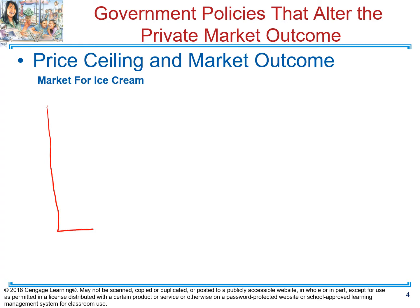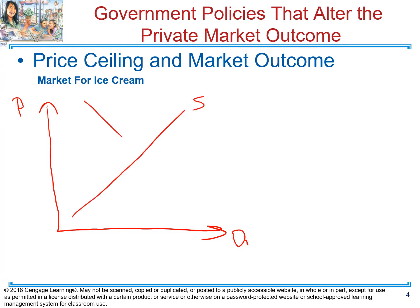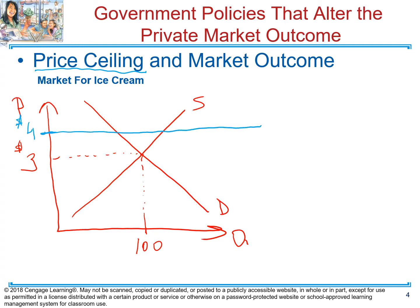Let's look at two different scenarios. Suppose we have a market for ice cream, and that market is initially in equilibrium. Supply is an upward sloping line, demand is a downward sloping line. Let's say equilibrium price is three dollars and equilibrium quantity is 100 units. Now the government can impose a price ceiling. In Scenario 1, the price ceiling is imposed above the equilibrium — say, four dollars — which is higher than the equilibrium price of three dollars.